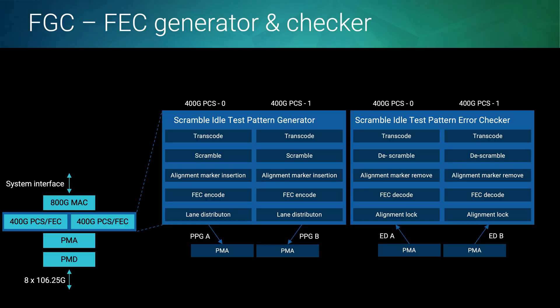In 2021, the market will move from 400G to 800G soon. BF 4000 is ready to support 800G now. Later, we will also support 800G FEC function on BF 4000. BF 4000 will support Reed-Solomon FEC, scramble, idle pattern generator and checker, and provide the FEC symbol error distribution plot, as we are leading on the market.